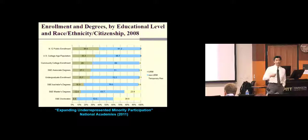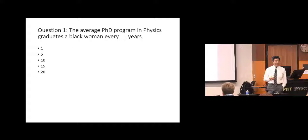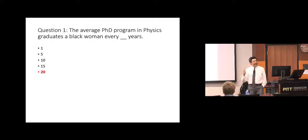Here's a question: see if you can estimate. The average PhD program in physics — I'm going to pick on physics a lot because I'm a physicist — graduates a Black woman with a PhD every how many years? How many think one year? Five years? Ten years? Fifteen years? Twenty? The answer is 20. The average physics PhD-granting program in the United States goes 20 years between awarding a PhD to an African American woman.